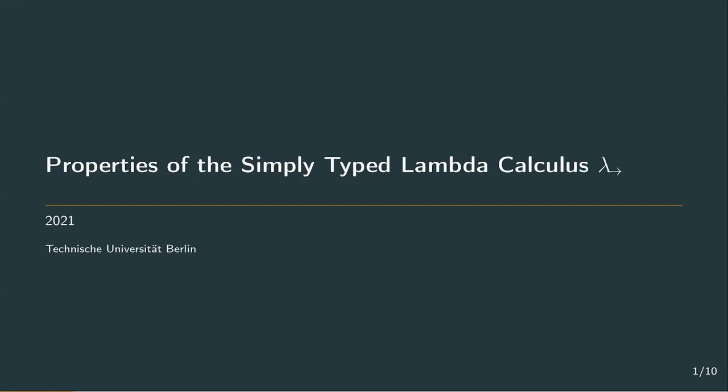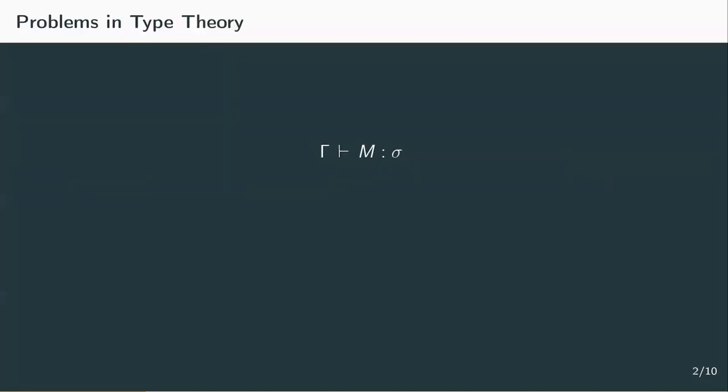To express that a term has a certain type, we formed a so-called judgment. On the left side is the context gamma, consisting of assumptions we take over the type of free variables. On the right side we have a term m and the type sigma of m.